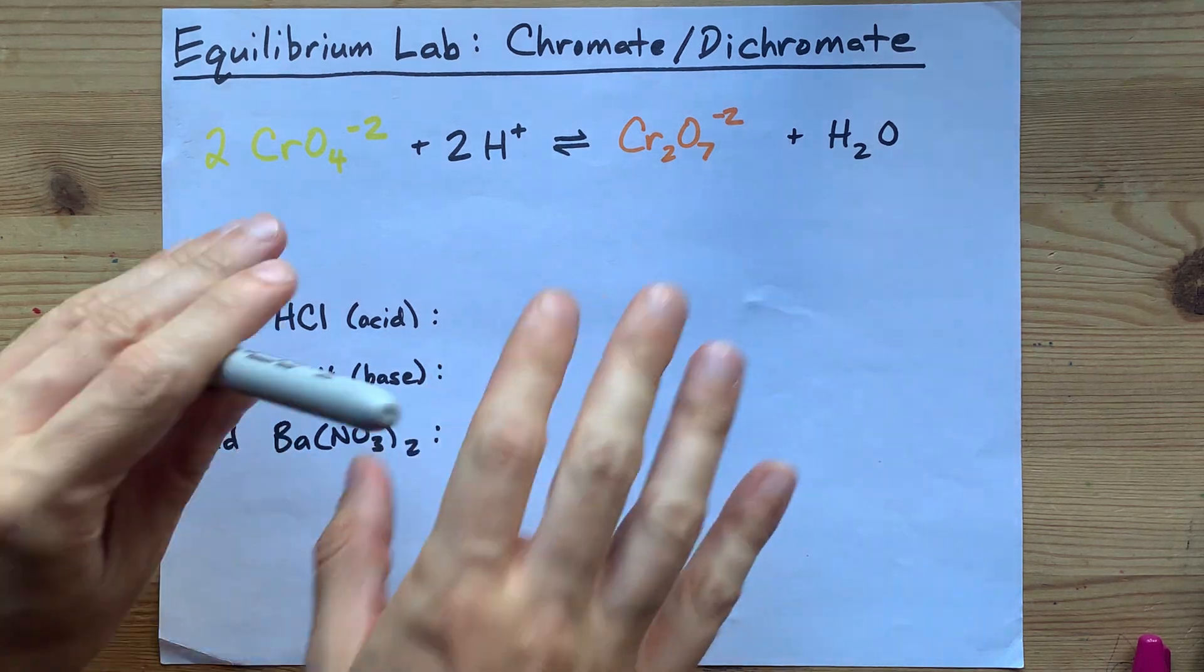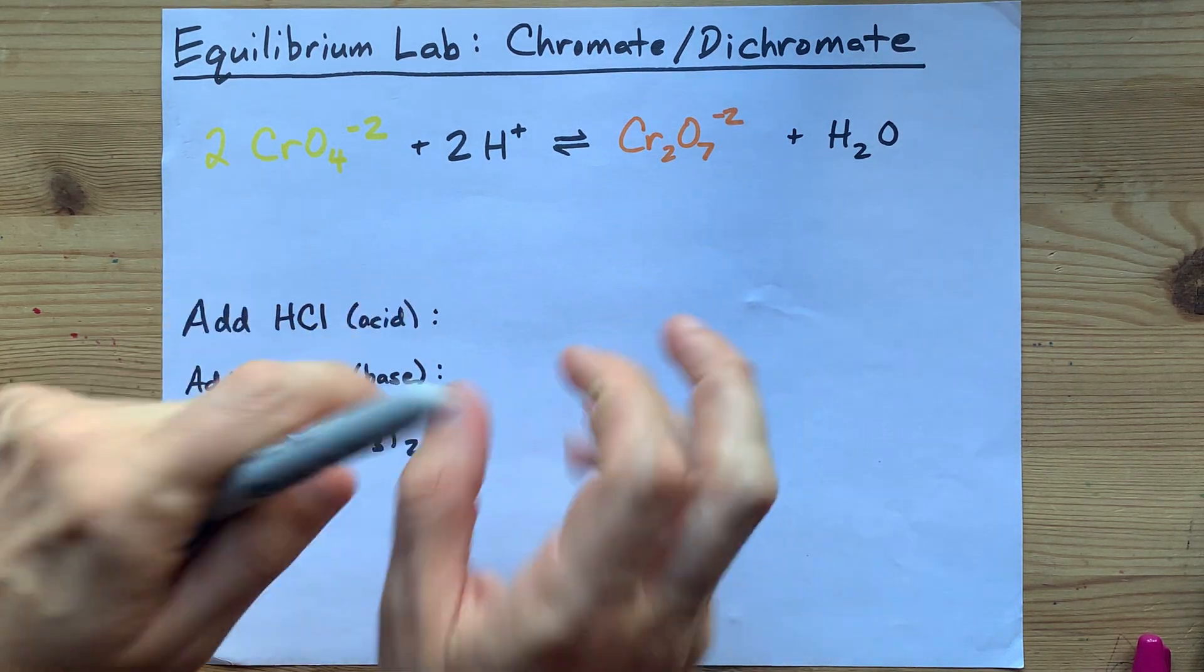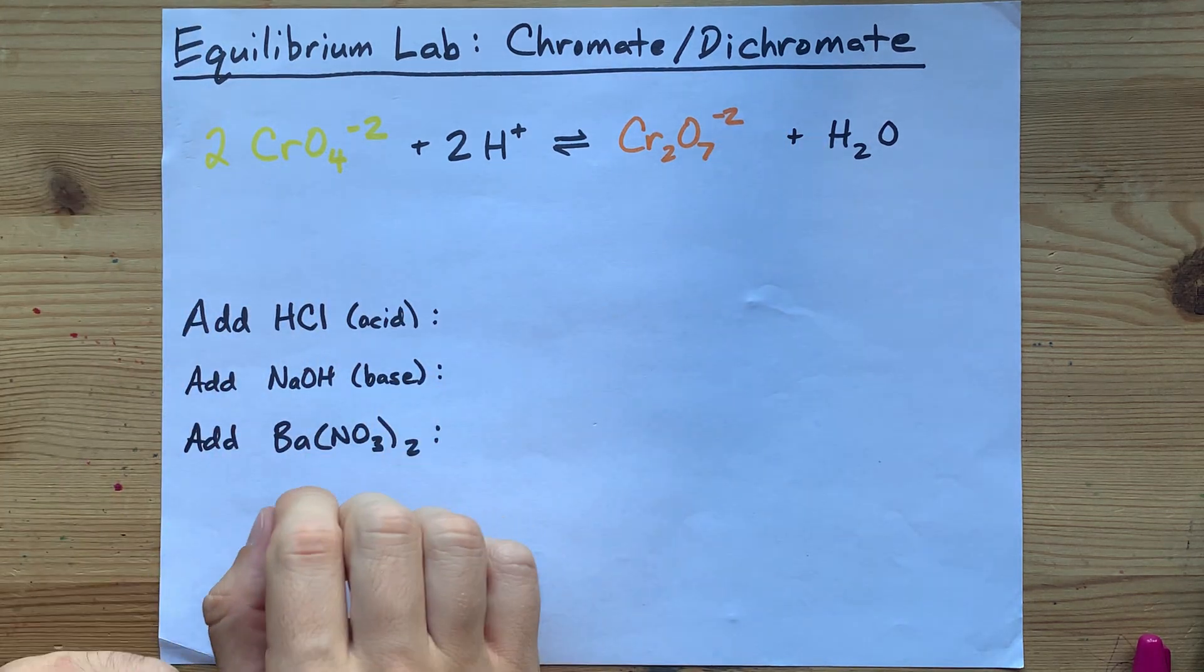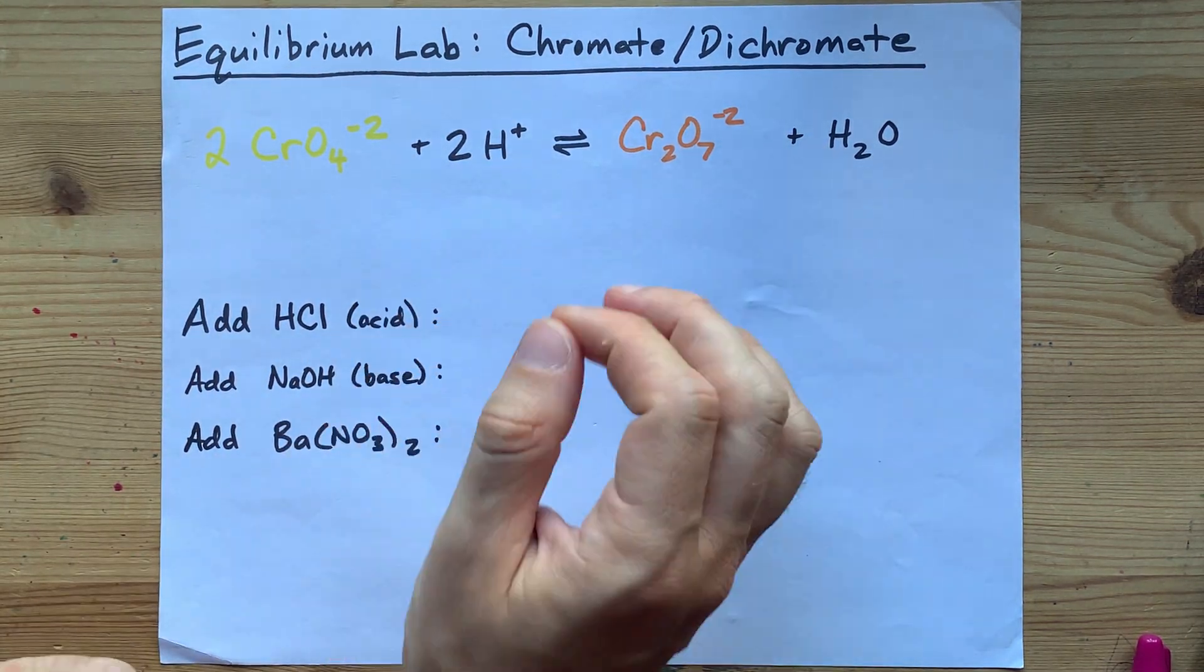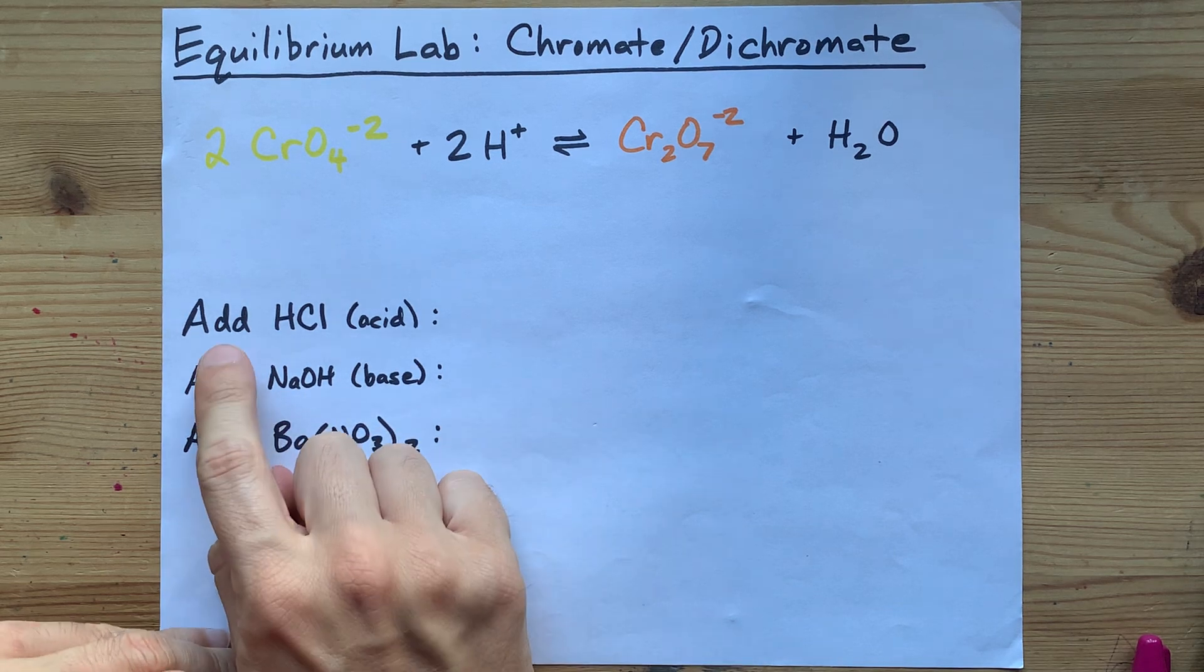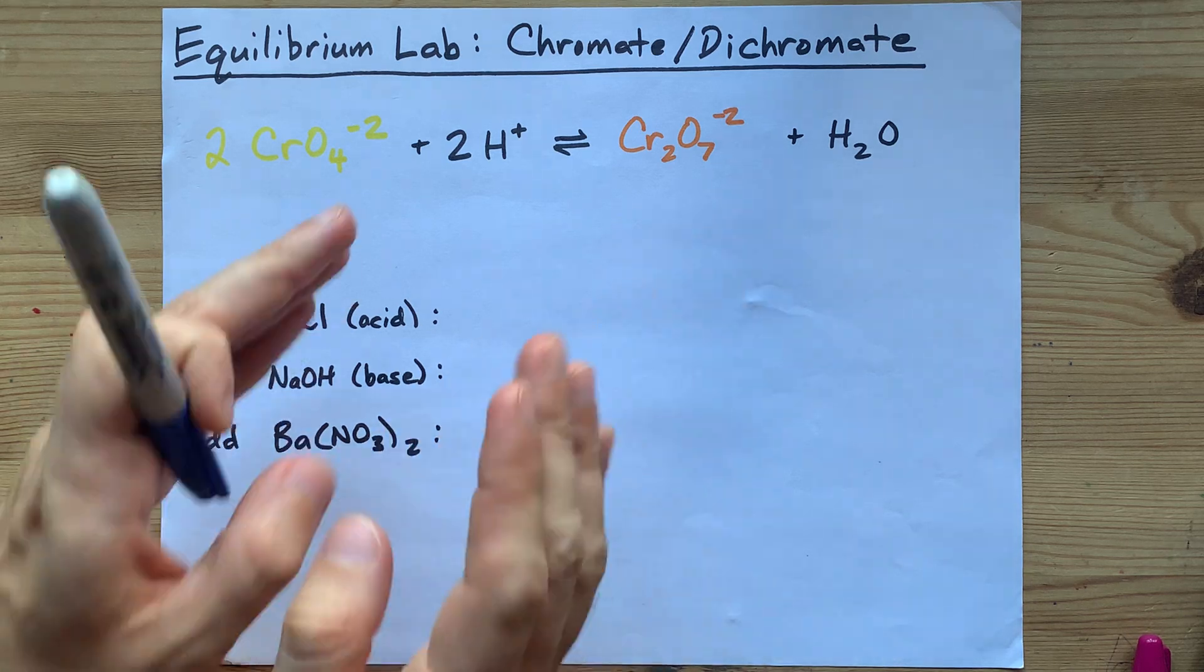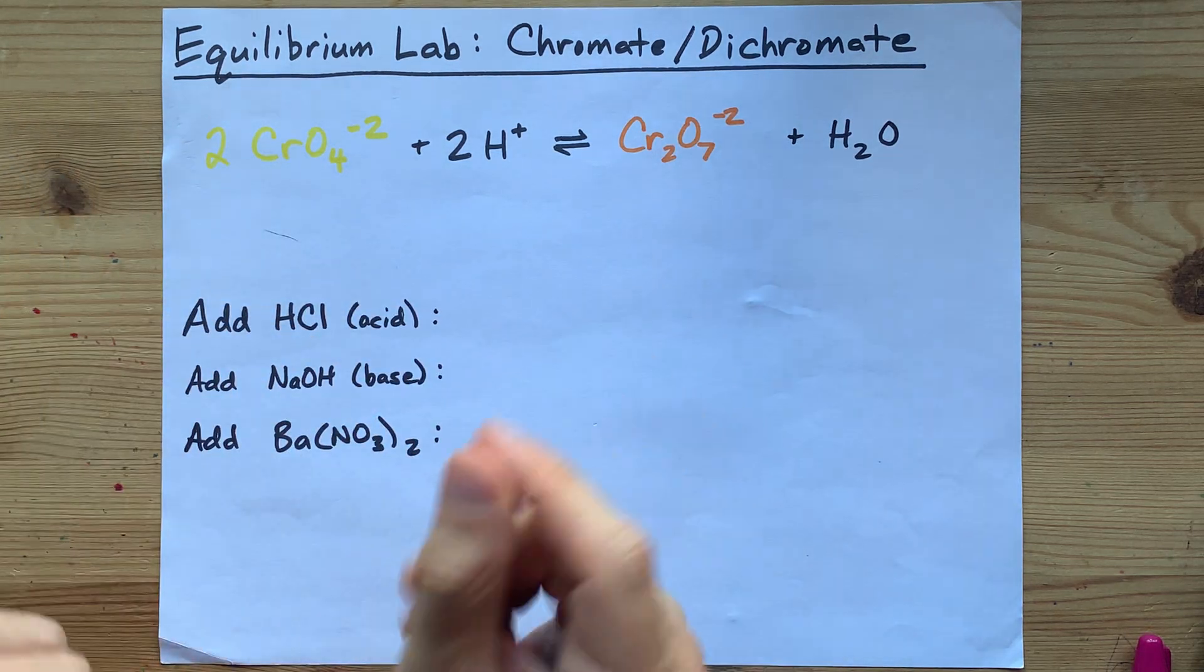The idea is that your solution is going to be at equilibrium when you start anyways. It will be heavily favored one side or the other, depending on what you put in your initial mixture. But each time you add acid or add base or add extra barium, you're going to cause a change in the equilibrium.